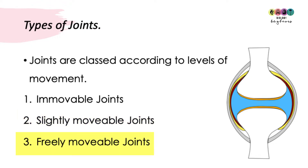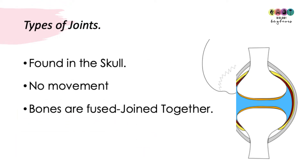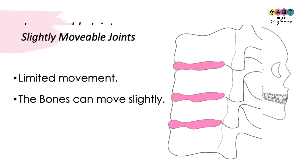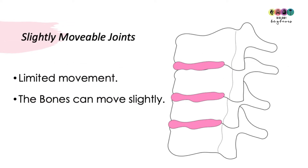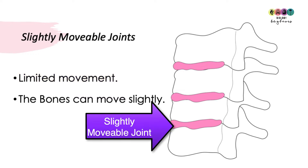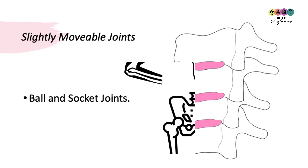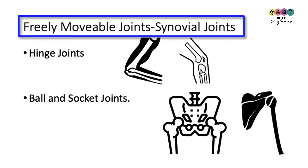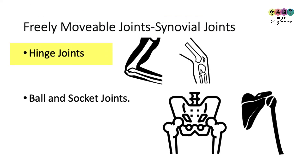Immovable joints are found in the skull. The skull is actually made up of many bones, but those bones have fused together so there's no movement. Slightly movable joints are where the bones have limited movement in relation to each other — for example, in the vertebral column, each of those vertebrae can move a little in relation to each other.